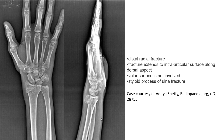This is an example of a Barton fracture where we can find a distal radius fracture extending to the intra-articular surface along the dorsal aspects, while the volar surface is not involved. Note also the styloid process fracture.